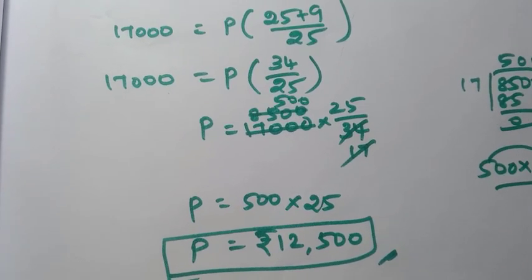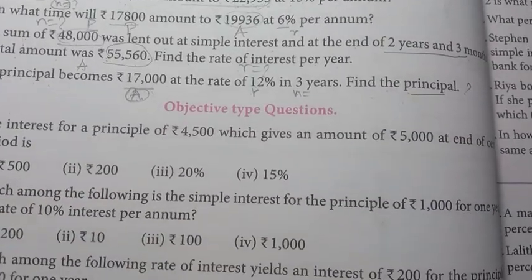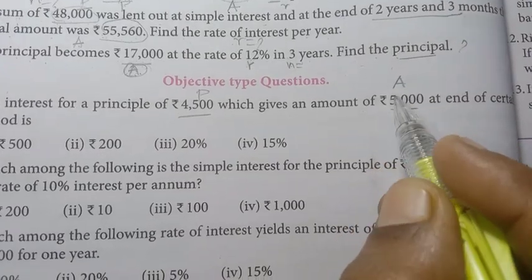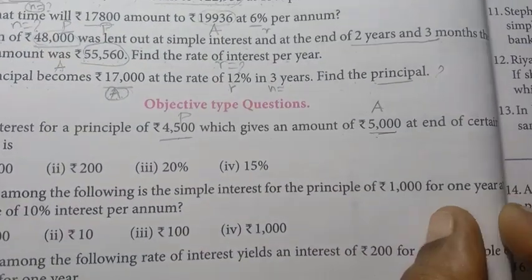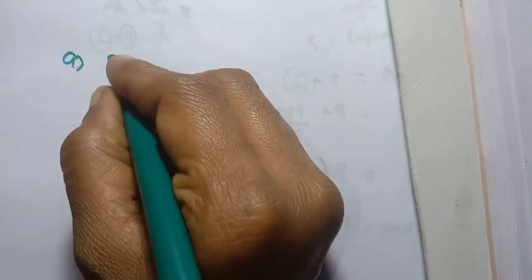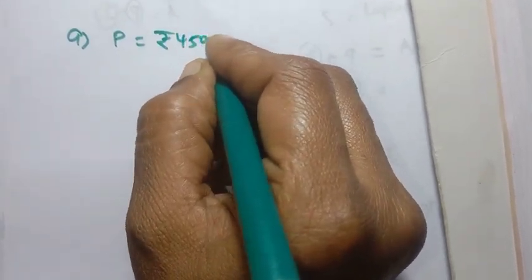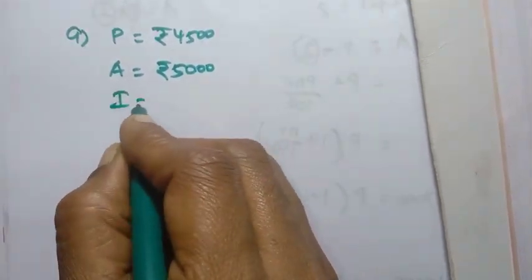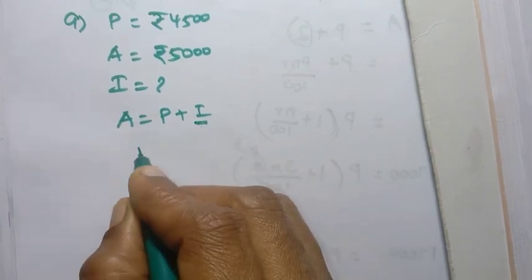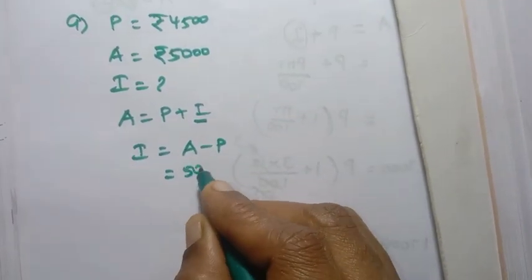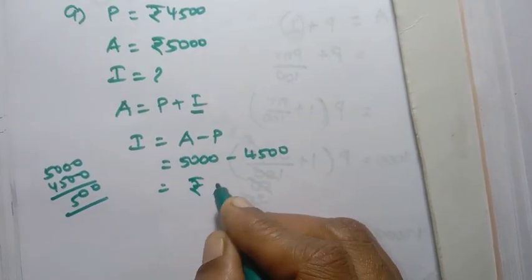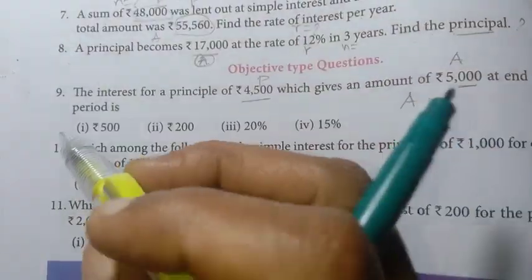Ninth question: The interest for a principal of rupees 4,500 which gives an amount of Rs.5,000 at the end of a certain period. Principal P = Rs.4,500, Amount A = Rs.5,000. Interest I = A minus P = 5,000 minus 4,500 = Rs.500. So the answer is option one, rupees 500.